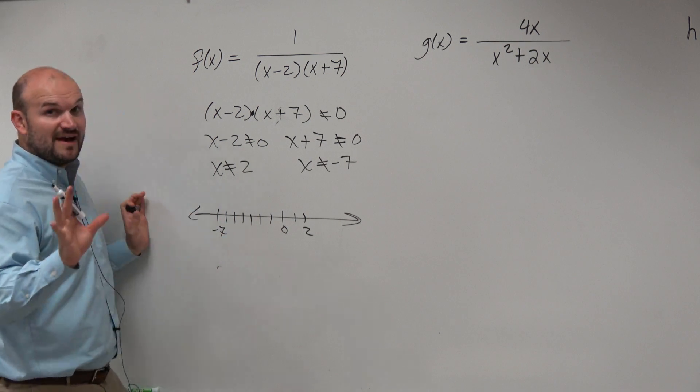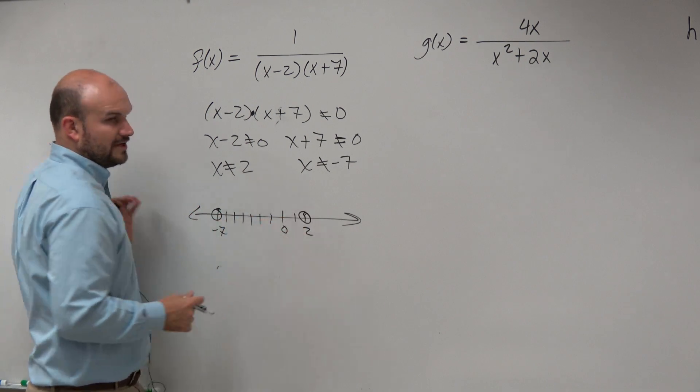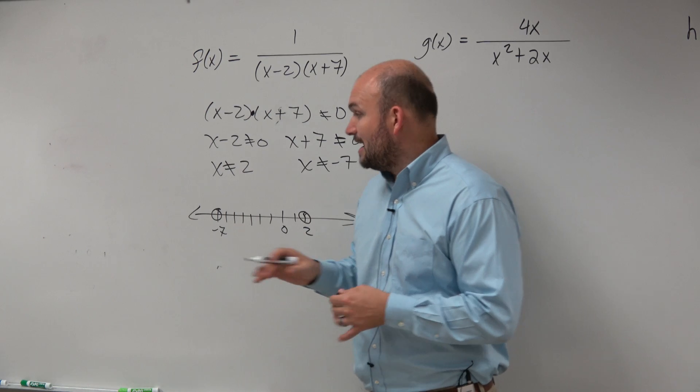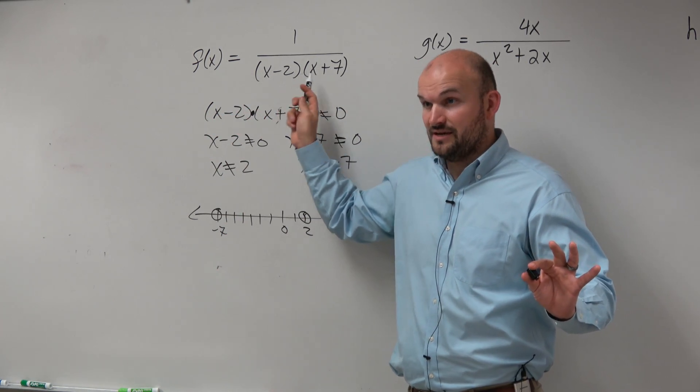OK? So for undefined values on a number line, we're just going to use open circles. OK? Because again, we're just using the number lines. So everything else is good, though, right? Would you guys agree? Everything else is defined except for negative 7 and 2.